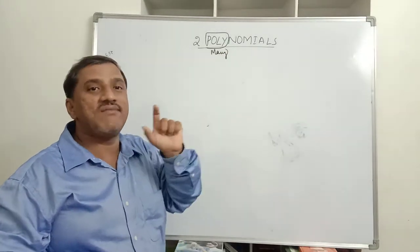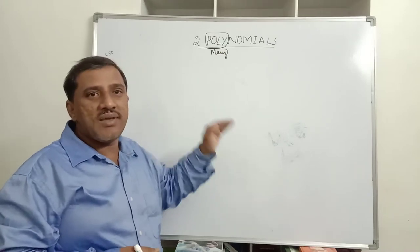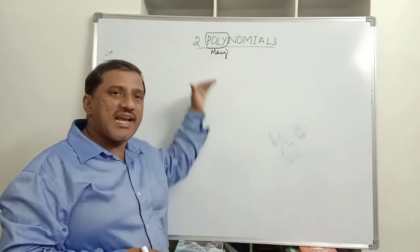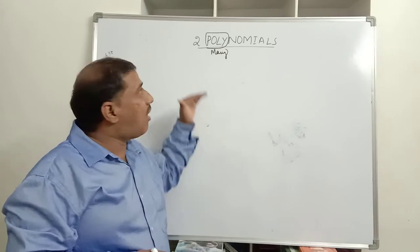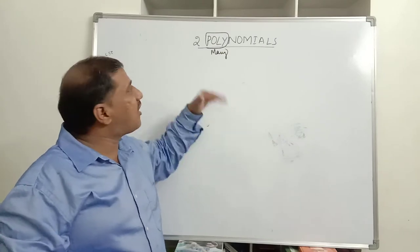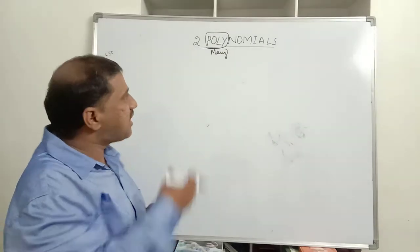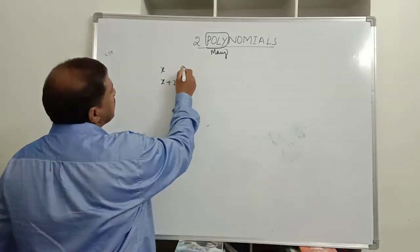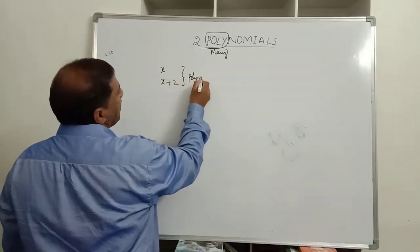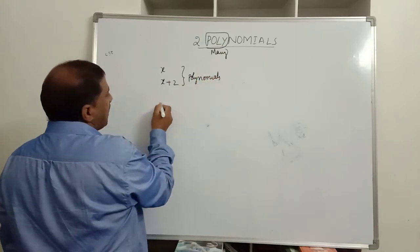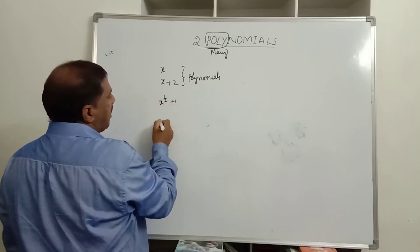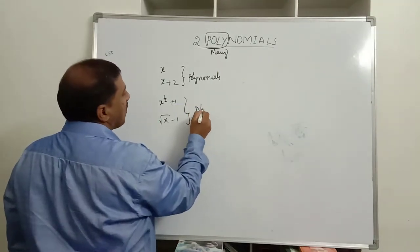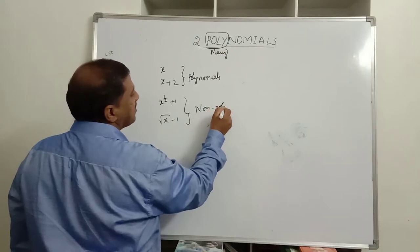In 10th class we will study polynomials in one variable, as we did in 9th standard. Not all algebraic expressions are polynomials, but all polynomials are algebraic expressions. For example, x and x plus 2 are algebraic expressions that are polynomials. But x to the power 1/2 plus 1, or square root of x minus 1, are algebraic expressions that are non-polynomials.